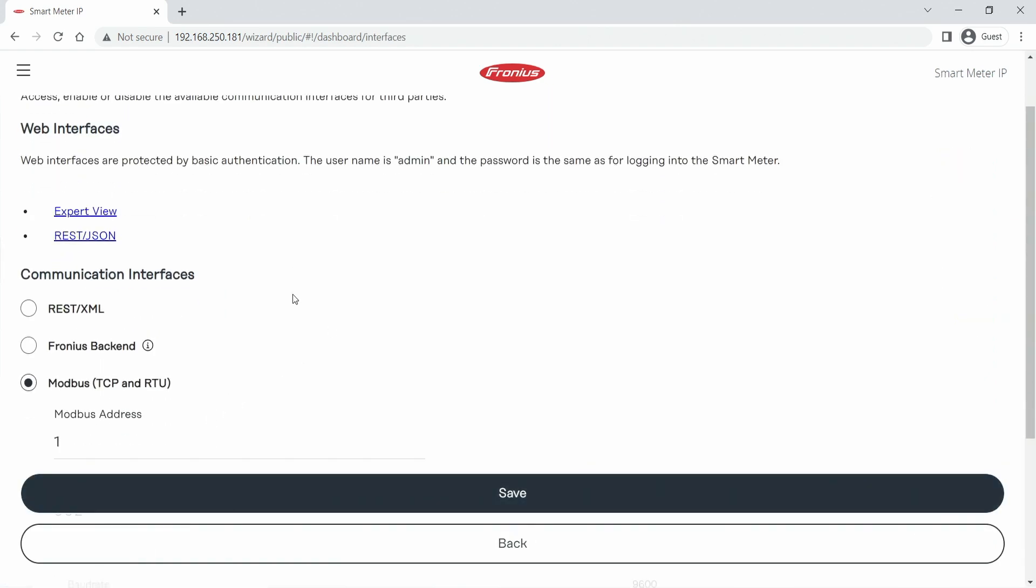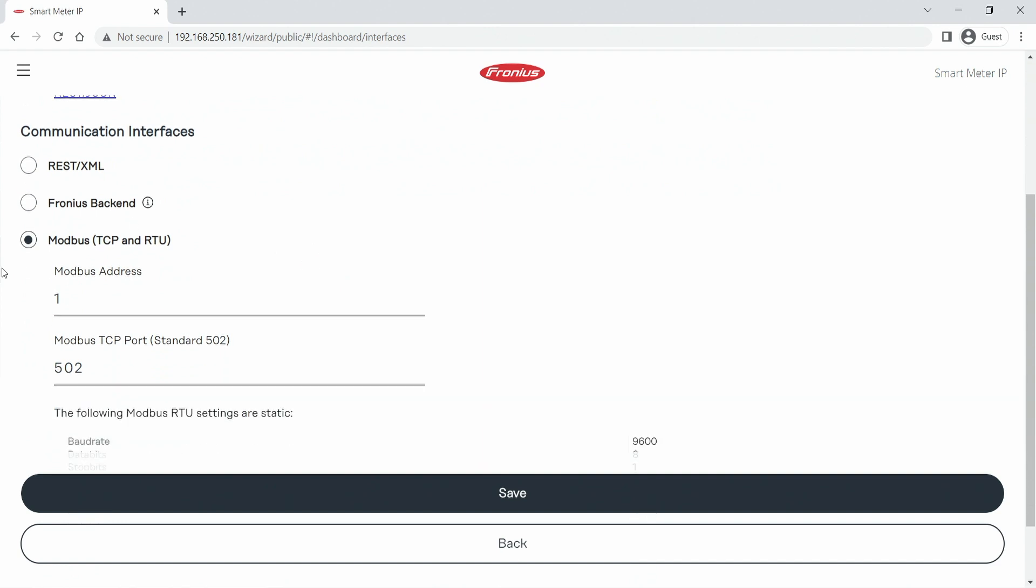With this little symbol here we can click on it. It opens up a submenu, and if we scroll down further we can see or select Modbus TCP and RTU, and here it's very easy to change from the standard 1 to number 2 or 3.